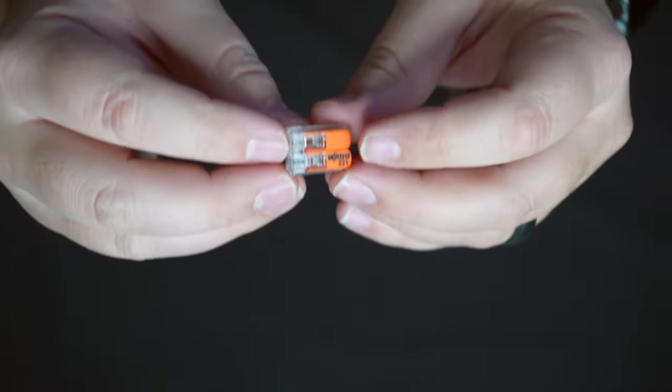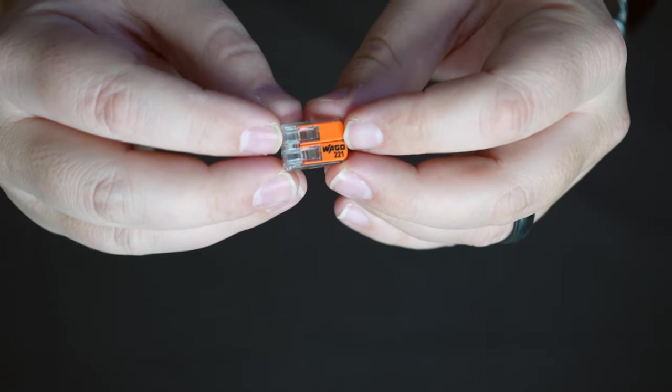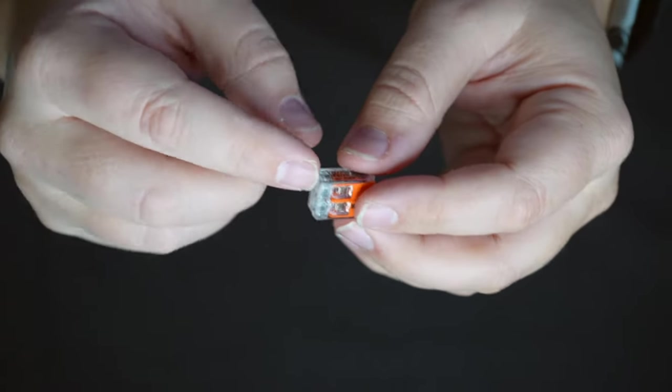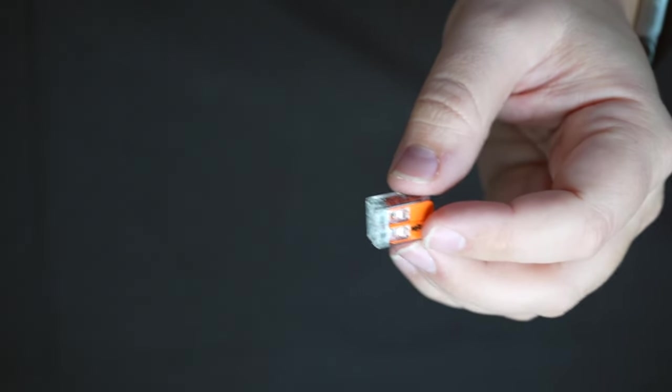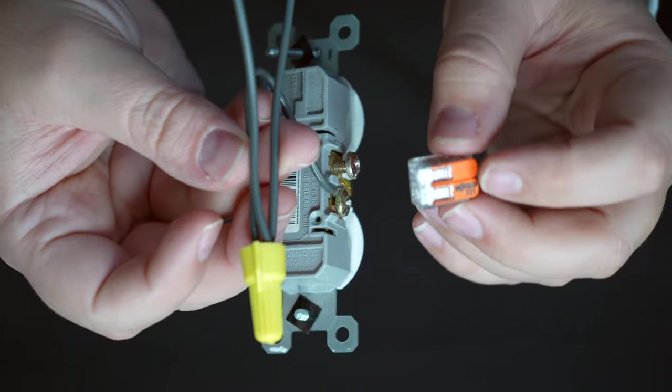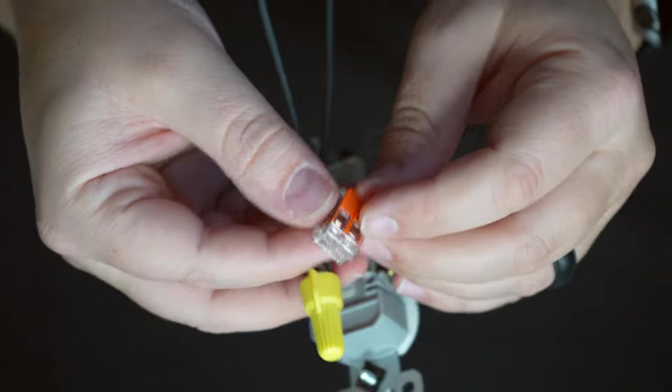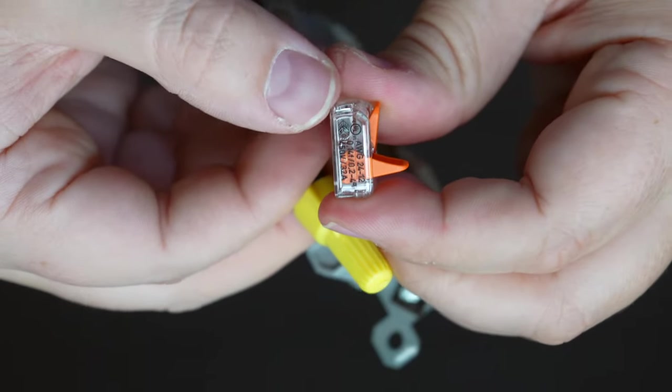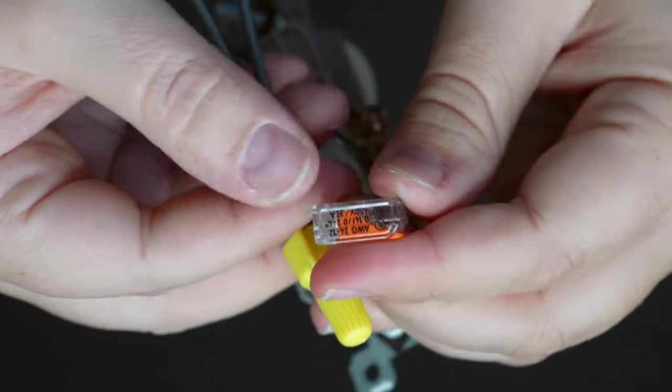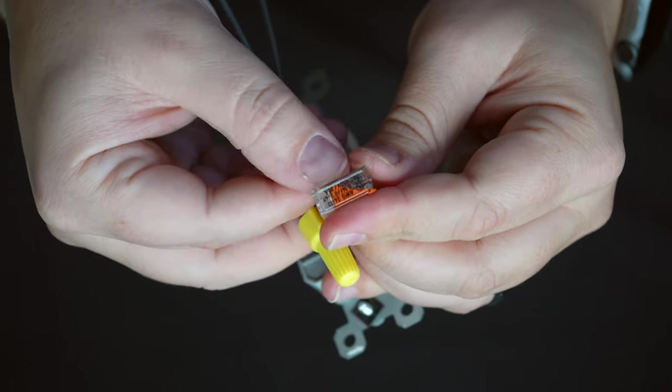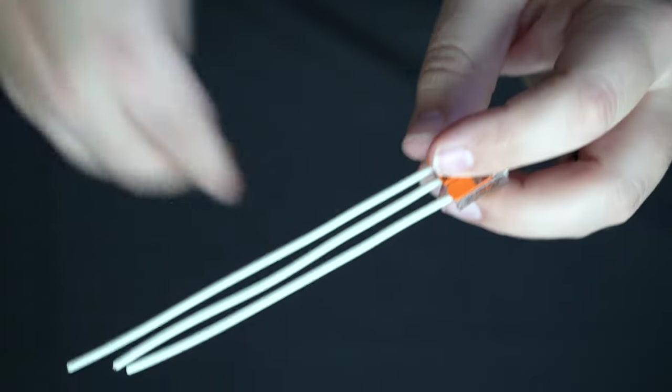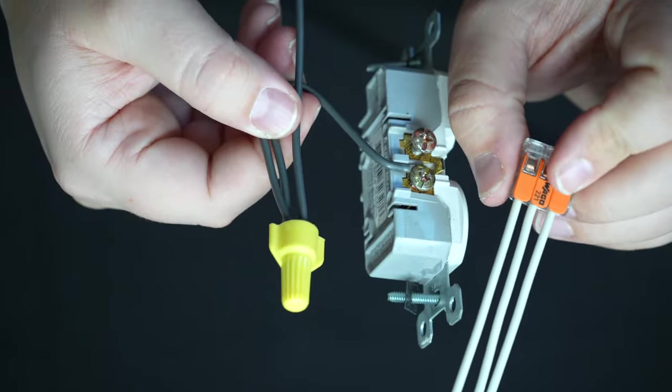So the alternative to this would be using what's called a Wago connector. Now Wagos function, they have the same purpose as a wire nut, but the difference is instead of putting the wires into the wire nut in order to make the connection like you see here with Wagos, basically these have levers and then you can insert the wire into this connection and then close the lever down and it will make a really tight, secure connection that won't come loose. Here's a version where we have three wires coming into it. That's basically the equivalent of this wire nut here. It's got three wires coming into it.